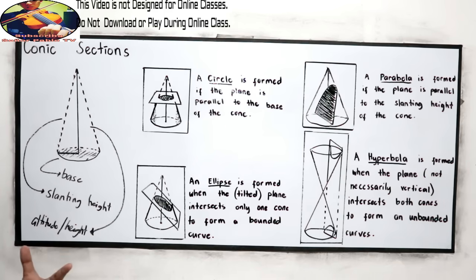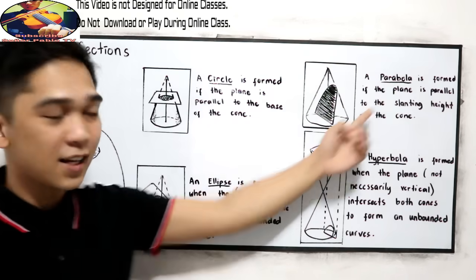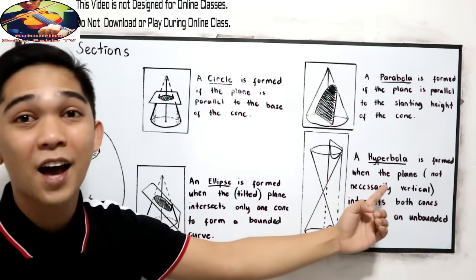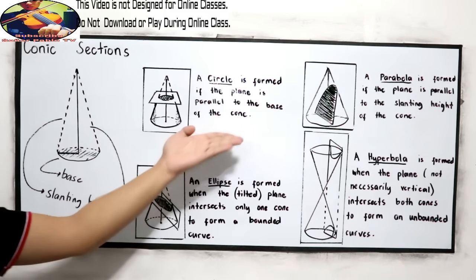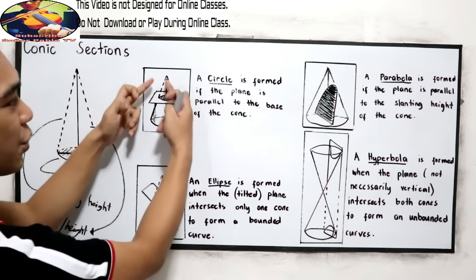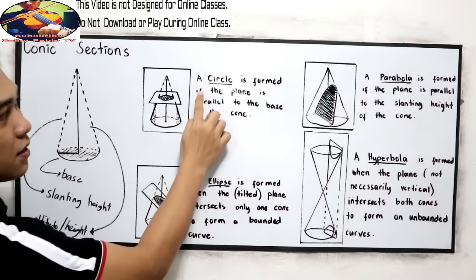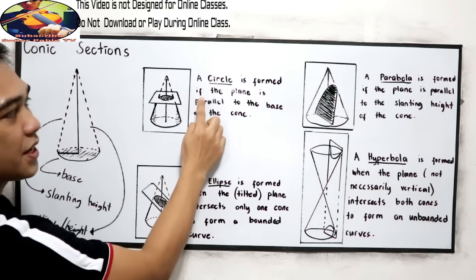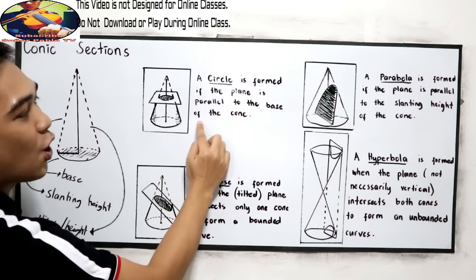Now, we stated that in our conic section, we have a circle, parabola, ellipse, and hyperbola. Let us discuss the circle first. So, definition of circle: a circle is formed if the plane is parallel to the base of the cone.